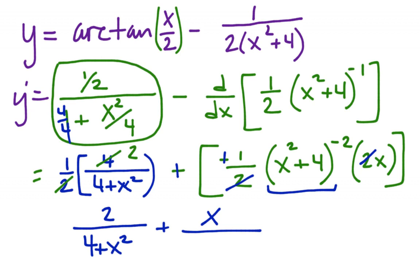So it looks like I go one more step here. And give common denominator: (x squared plus 4) over (x squared plus 4).